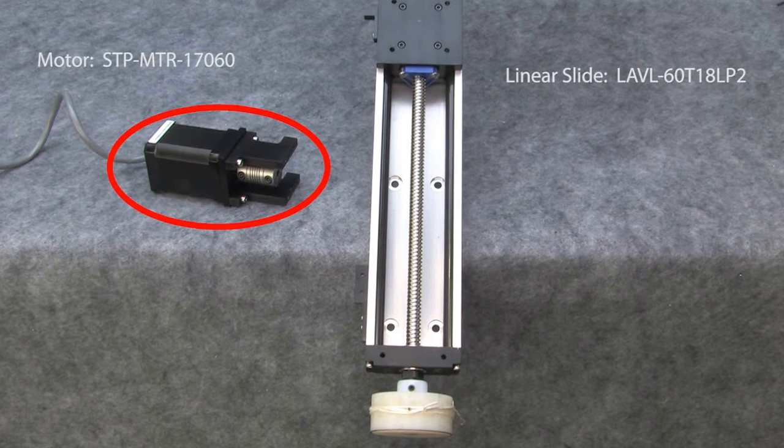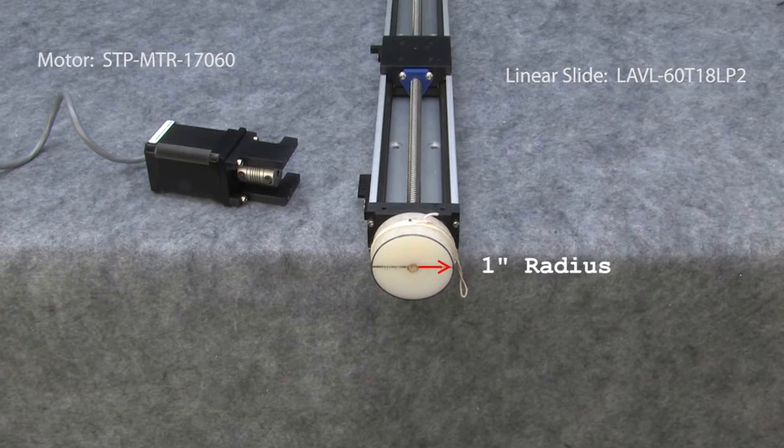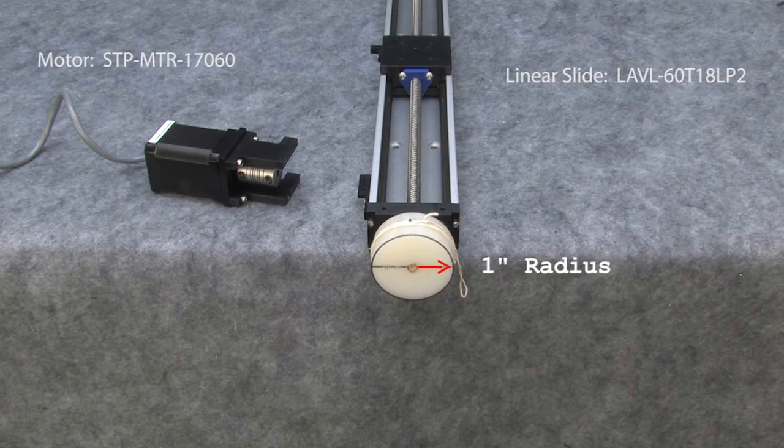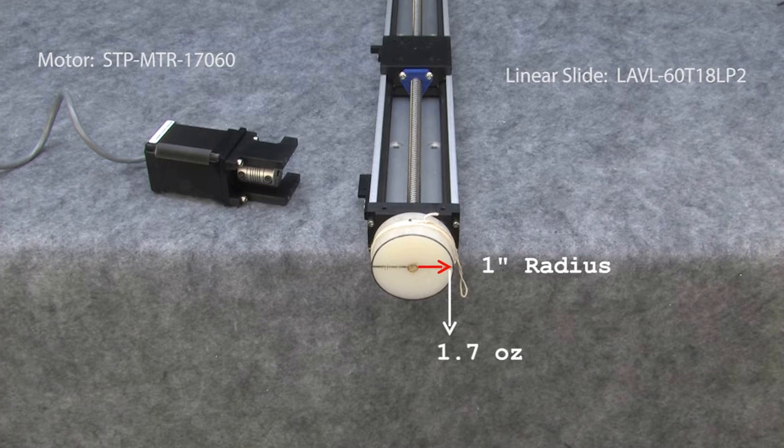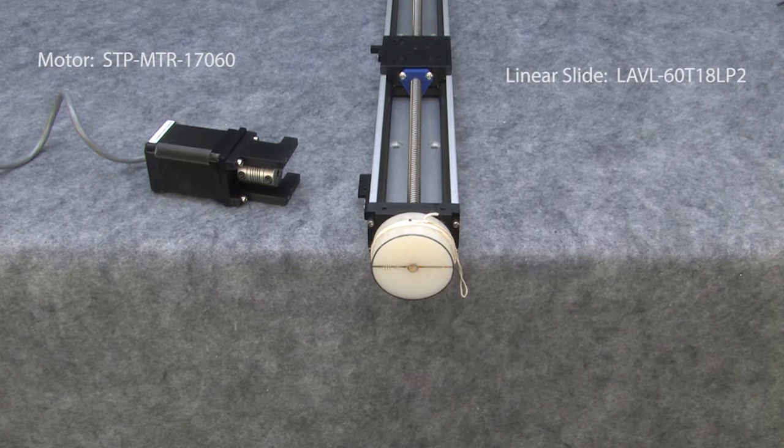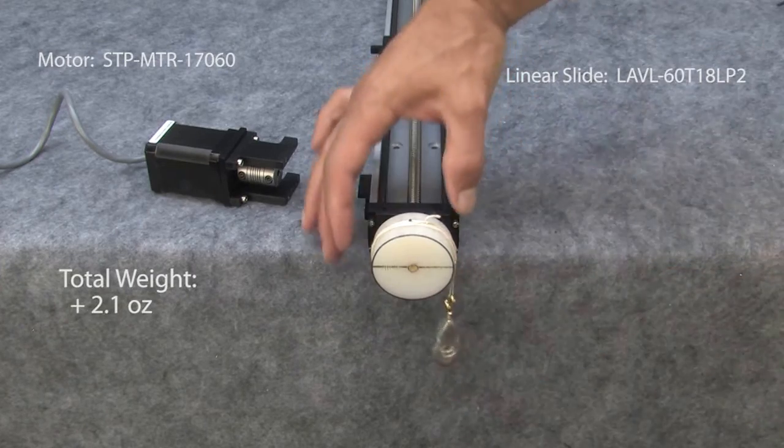I removed the motor and coupler and added a 2 inch nylon disc so we have a 1 inch radius. According to our calculations, at a 1 inch radius we should need 1.7 ounces to move the carriage, right? I have a 2 ounce lead weight here, that should be more than enough. Hmm, not moving.